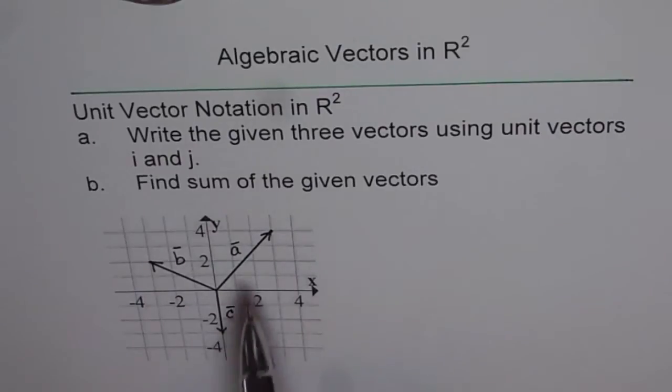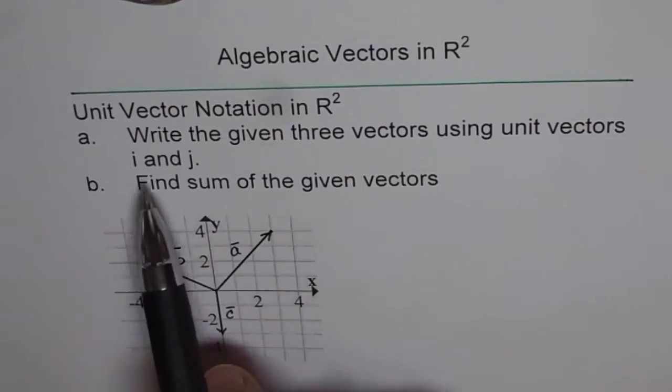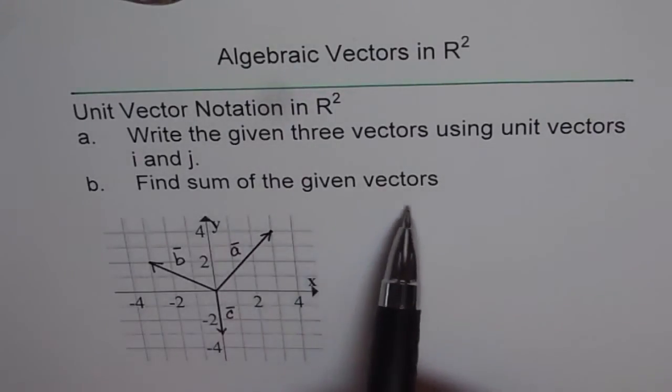So we are given these three vectors. We need to write them using unit vectors i and j. And part B of this question is find sum of the given vectors.